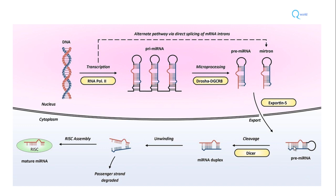To summarize the biogenesis pathway: from DNA, pri-miRNA is formed; with microprocessing by Drosha proteins, pre-miRNA is formed. Sometimes, via an alternative pathway from DNA, mirtrons are directly produced. Both mirtrons and pre-miRNA are exported via Exportin-5, a nucleocytoplasmic shuttler. They are then cleaved by Dicer enzyme to form an miRNA duplex, which undergoes unwinding. The passenger strand is degraded, and the mature miRNA binds to RISC proteins for its function.